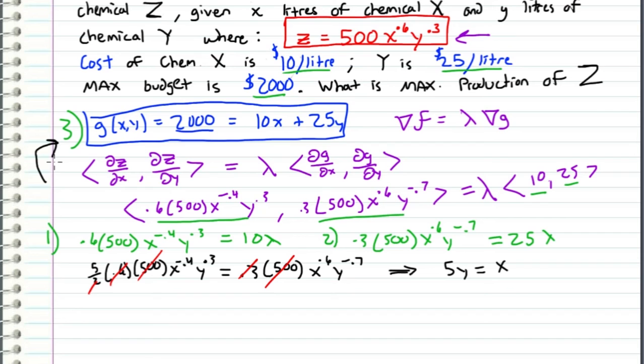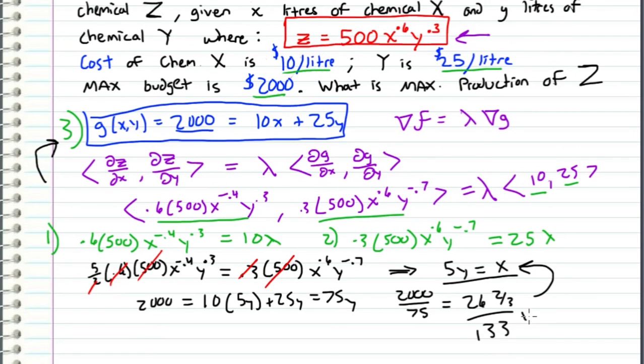And then I can come back to this third equation which was our original constraint and I can substitute this into the equation. So what I get is 2,000 is equal to 10 times 5y plus 25y which is equal to 75y and now I can solve for y. I just divide 2,000 by 75 which is equal to 26 and 2/3. And then I take this result and I plug it back in here to get x which is just 26 and 2/3 times 5 which gives me 133 and 1/3.